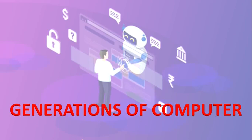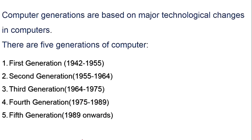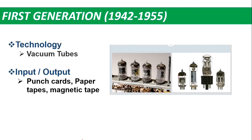Hello friends, today we will learn about computer generations. Major technological changes are divided into computer generations. There are 5 generations of computers: 1st, 2nd, 3rd, 4th, and 5th.